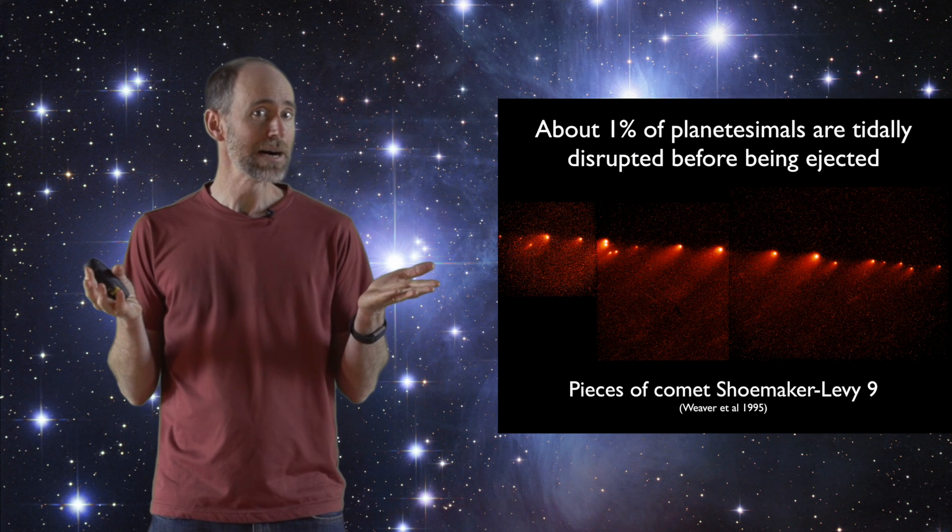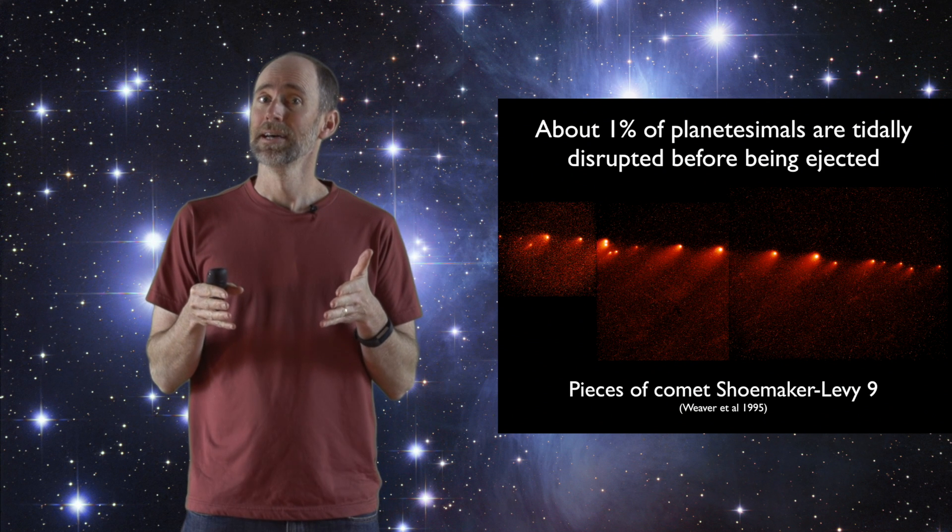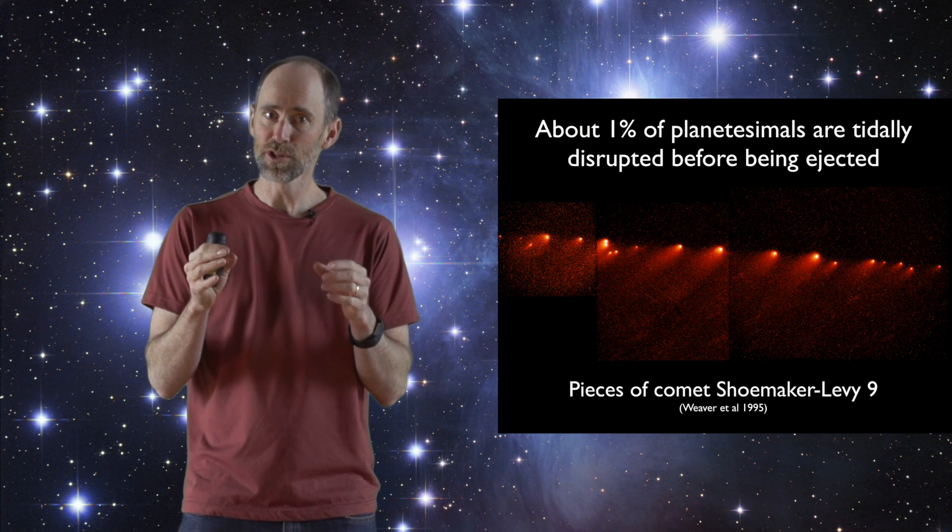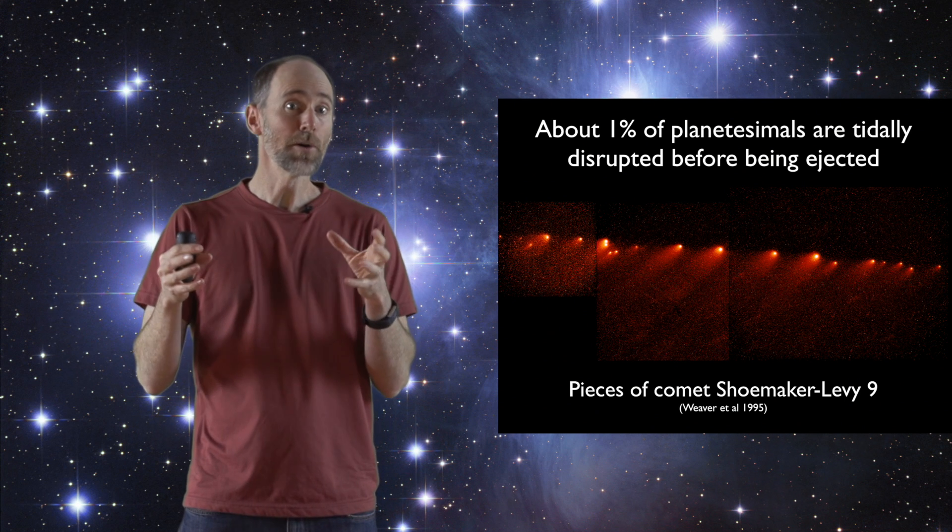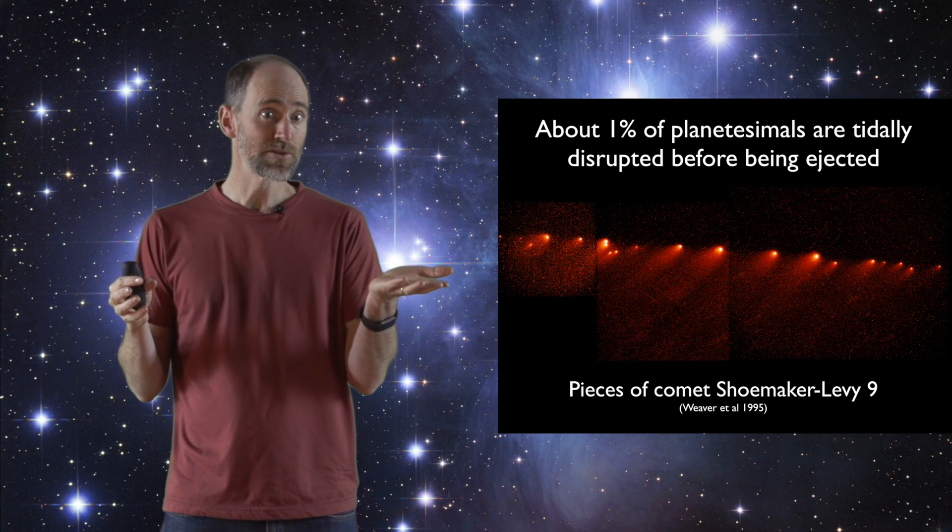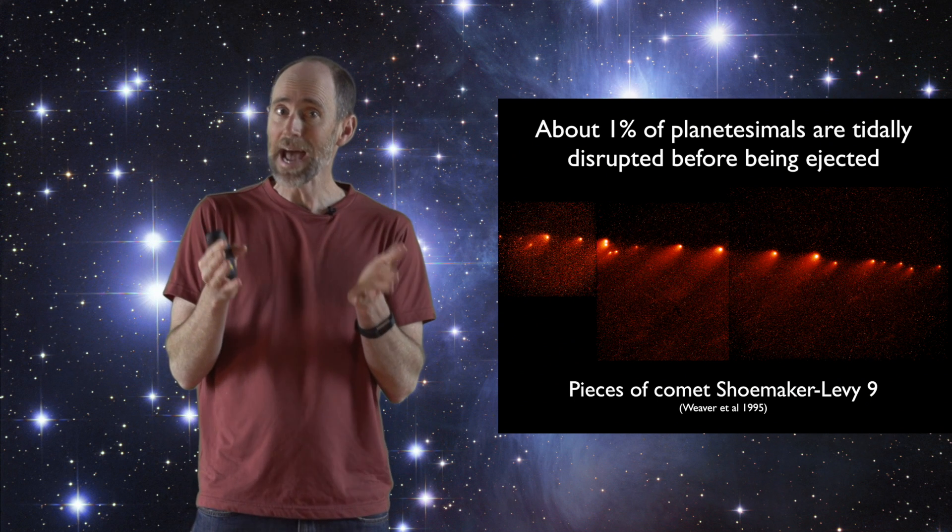And this may sound like an abstract idea, but we have examples of it happening in our own solar system. In 1992, Comet Shoemaker-Levy passed so close to Jupiter that it was torn into a long string of small pieces, and you can see that in the image right here. These are images of those pieces, and so we know this process happens,